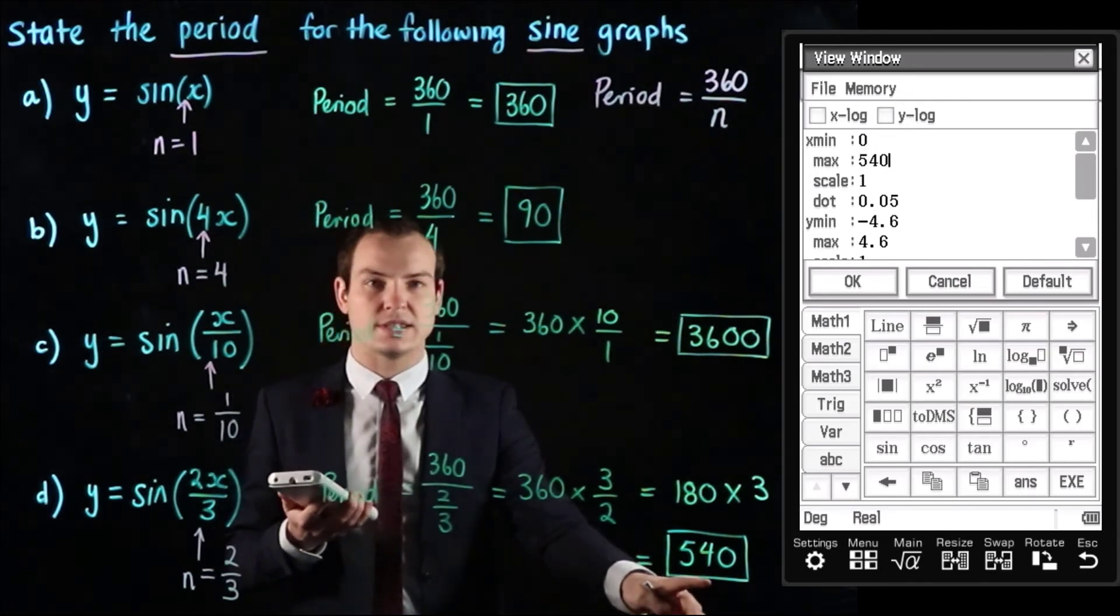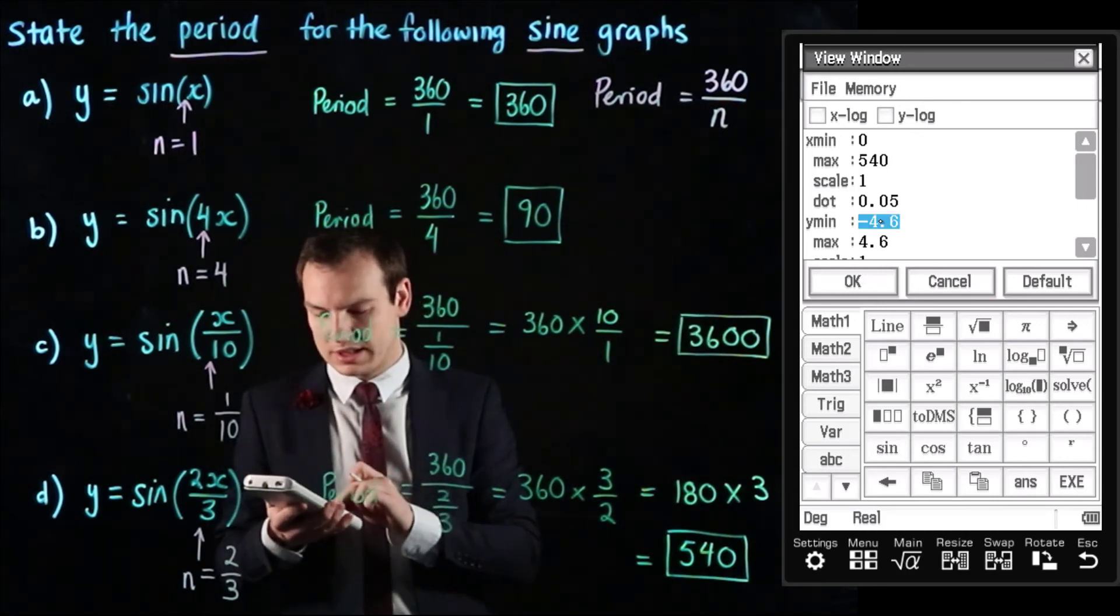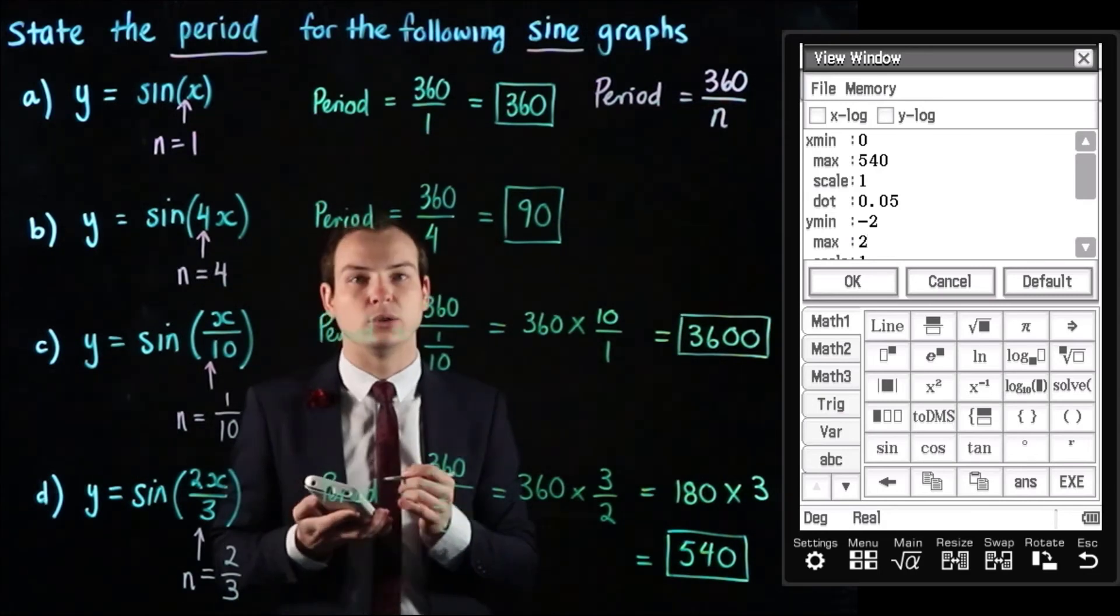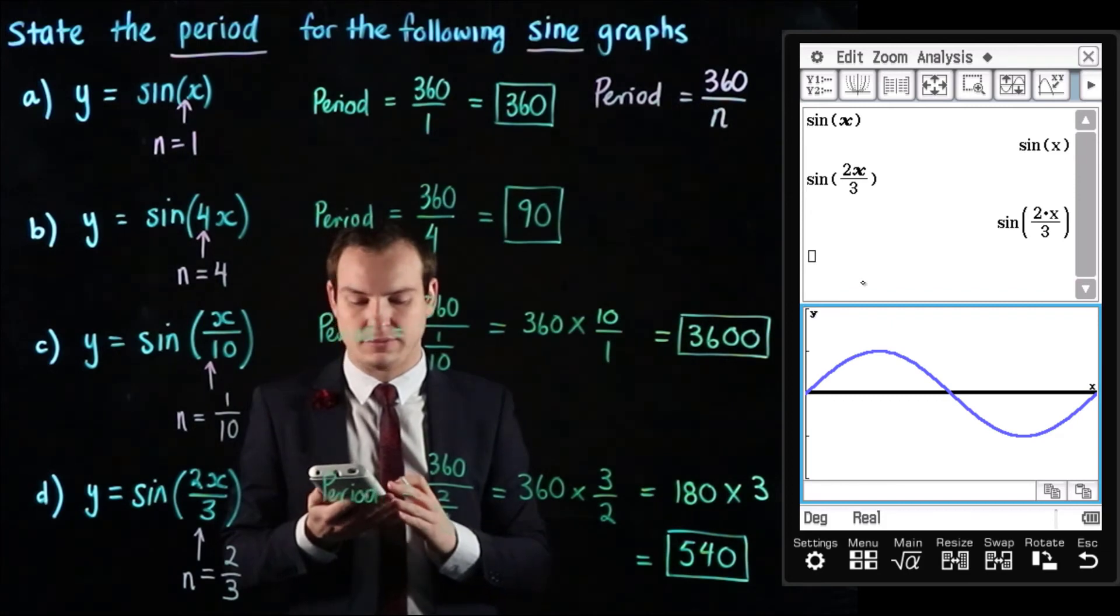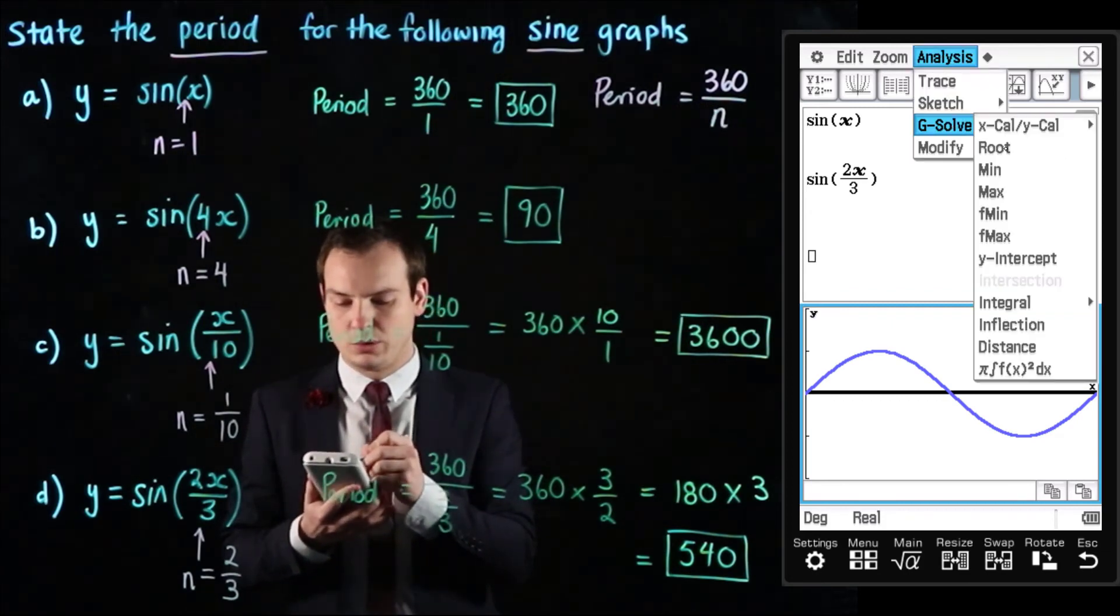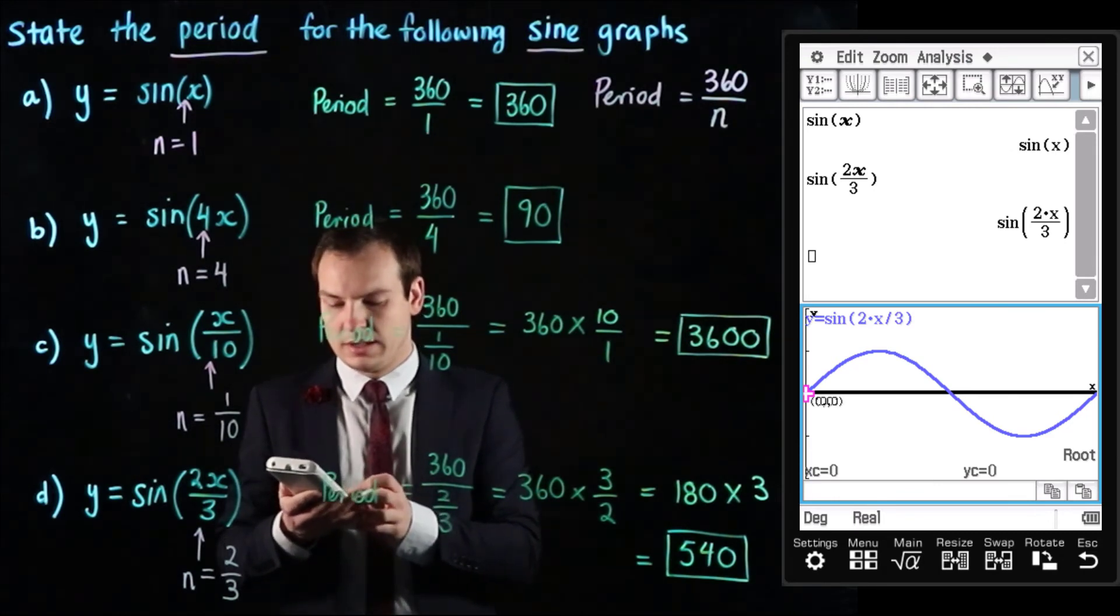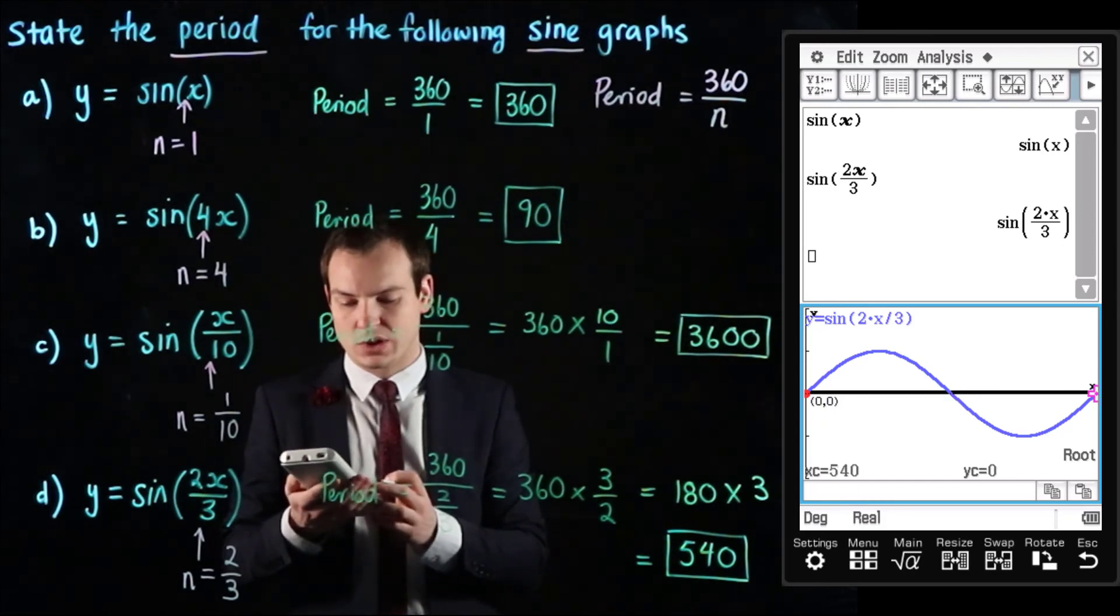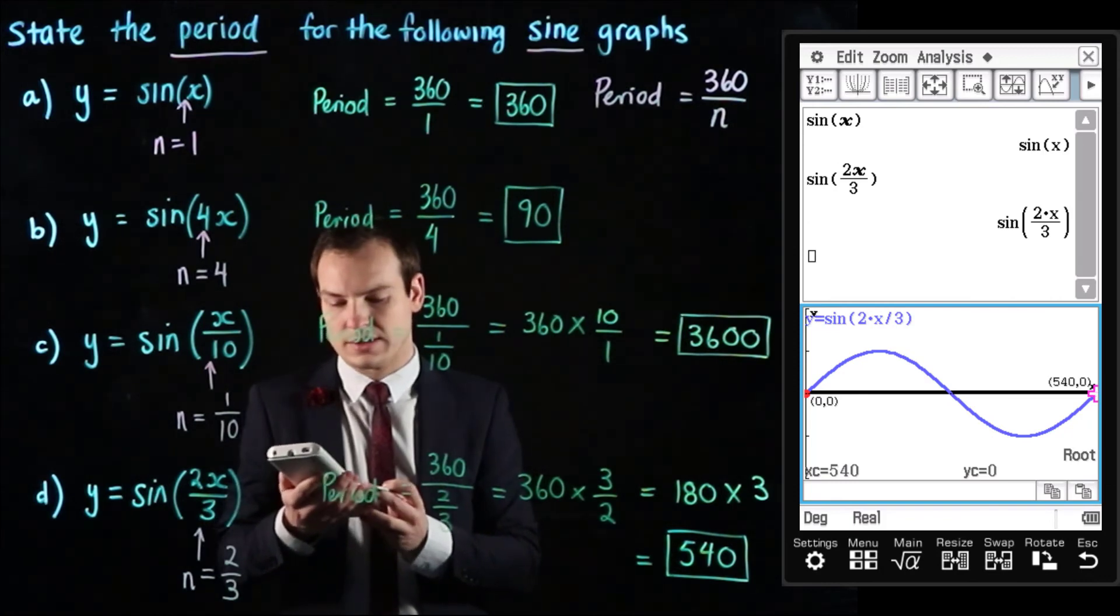For the y min and the y max I'm just going to set them as negative 2 and 2 to get a slightly better look at this function and hitting ok will sketch one cycle of the graph which we can see. Now going analysis g solve root we can see the first x intercept is at 0,0 the next one is going to be halfway which is 270 and then a full cycle takes us to another x intercept which is 540,0.